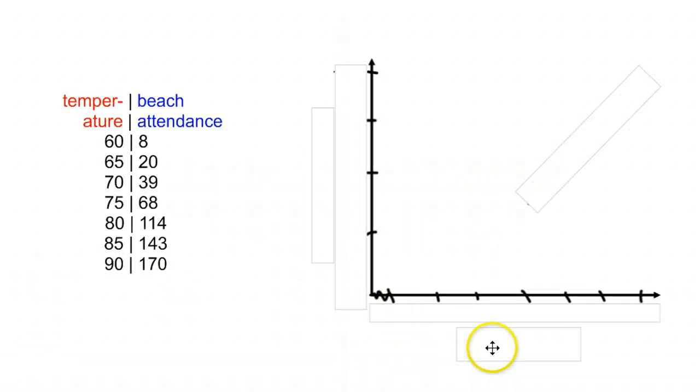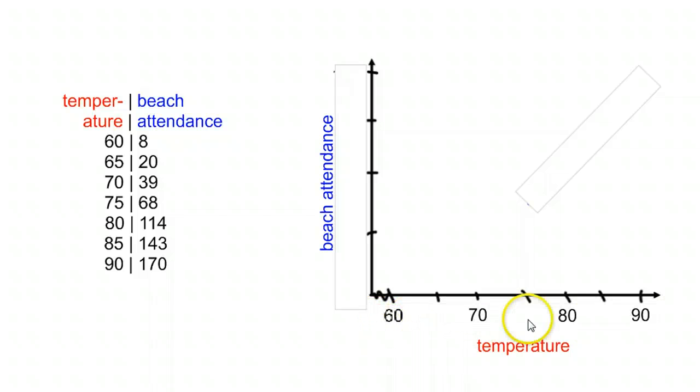So if we're setting that up, we have our explanatory and our response. We can look at this set of data here. So we're given this set of how many people are at the beach and what temperature it is. And we'll see that we can mark our graph. Don't be afraid to put a little break in there. You're not always going to start at zero, and that's fine.